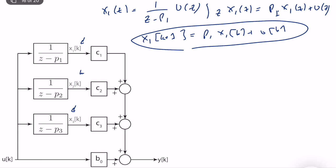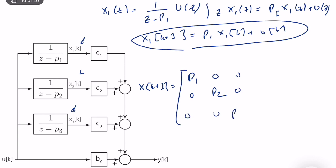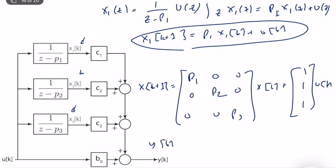We have three equations, and the system matrix is simply diagonal: [p1, 0, 0; 0, p2, 0; 0, 0, p3], because x2 only depends on itself, and so on. The input matrix B is [1; 1; 1] since all states are driven by u(k). And y(k) equals c1·x1 + c2·x2 + c3·x3 + b0, so y(k) = [c1 c2 c3]·x(k) + b0·u(k). We obtain the same D matrix because it is always equal to b0.